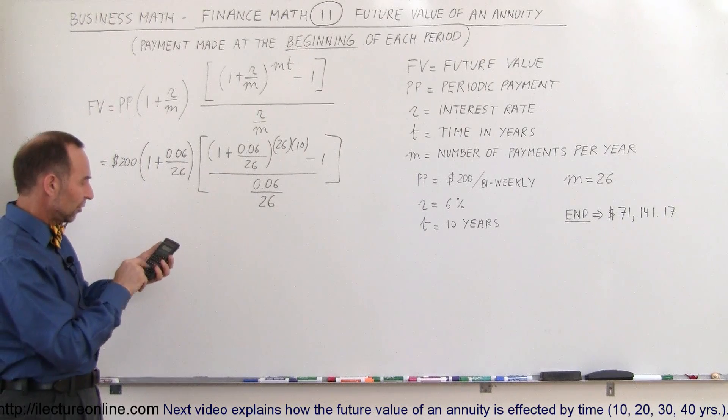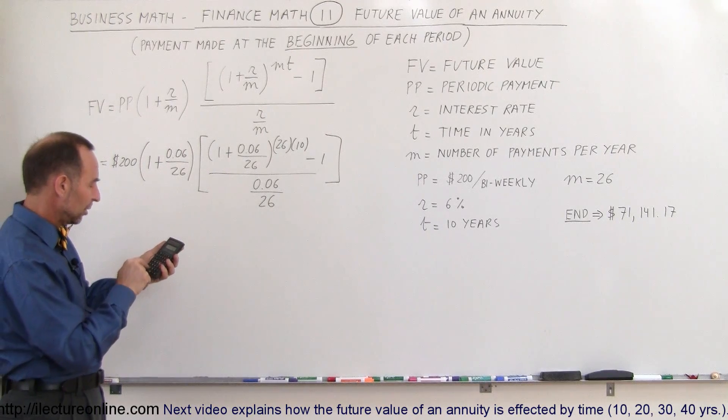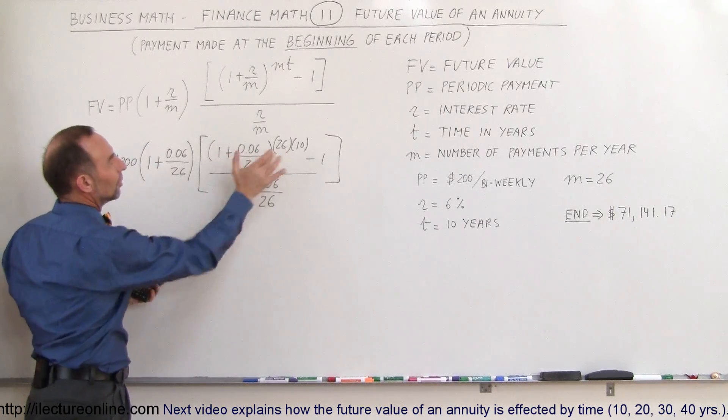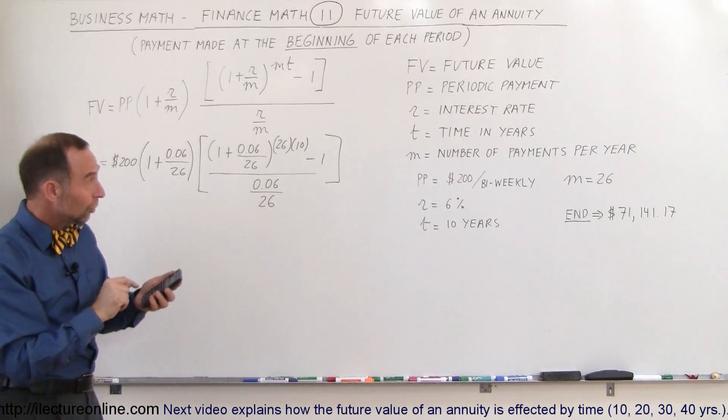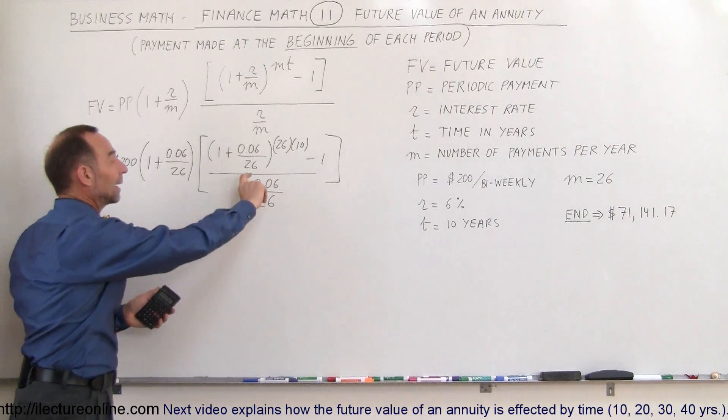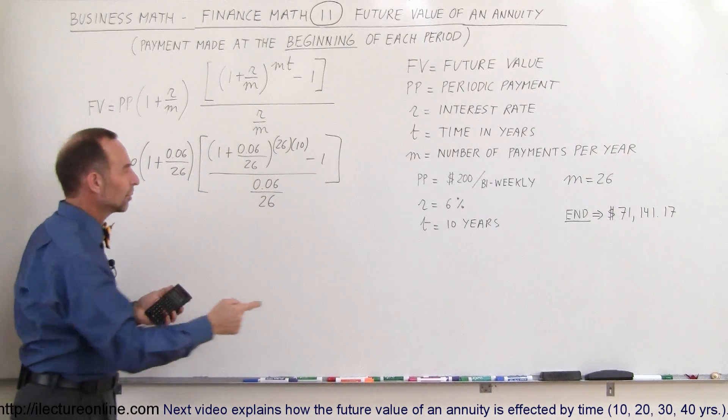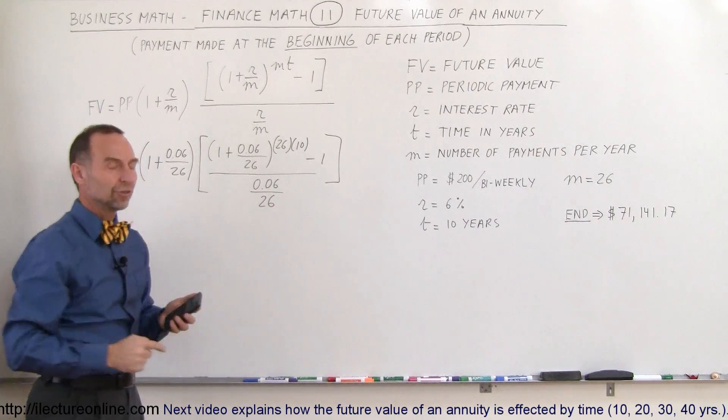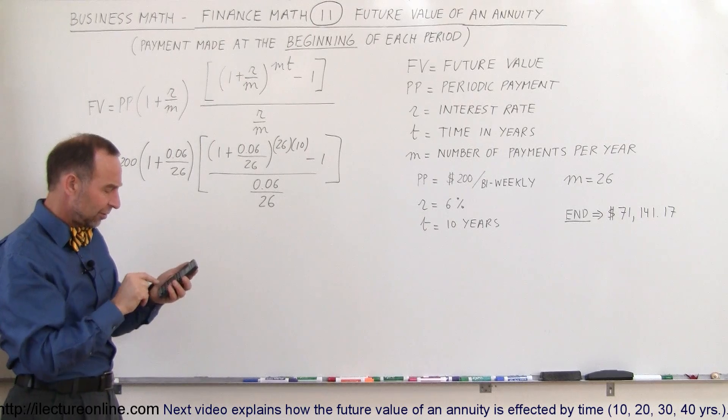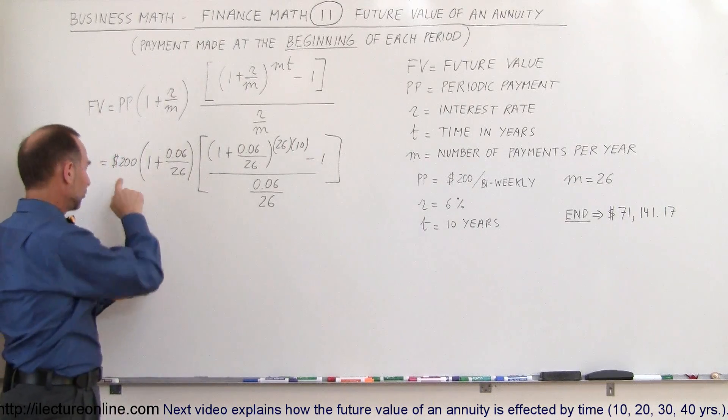So what does it look like? So we have 0.06 divided by 26. We add that to 1. We have what's inside the parentheses here. We raise that to the 260th power. And we subtract 1 from that. We then divide it by this fraction. So the same as multiplying times 26 and dividing by 0.06. So times 26 and divide by 0.06. And finally we multiply times 200.